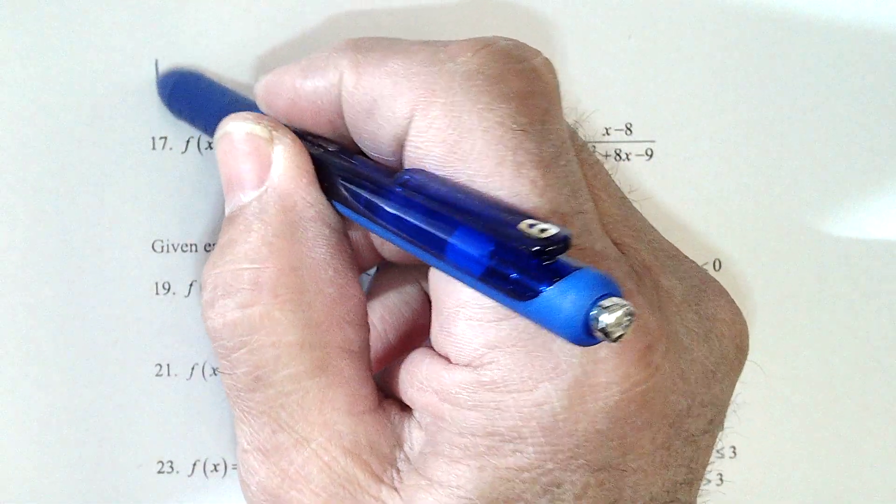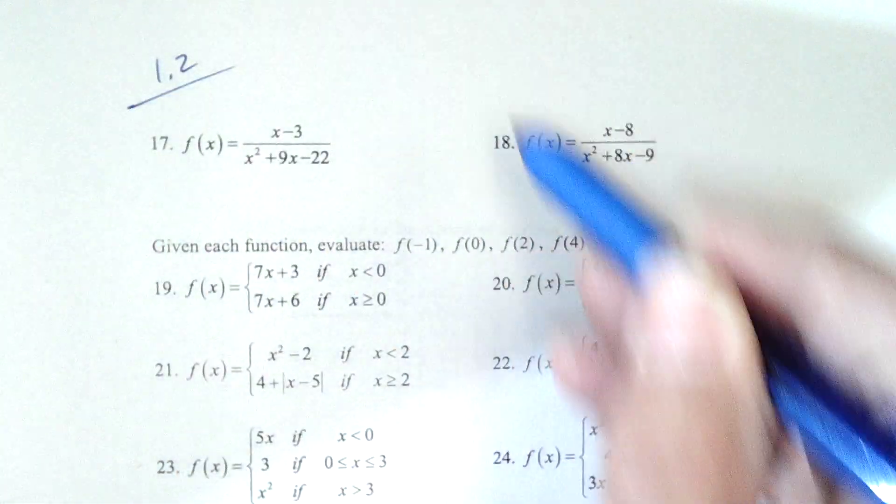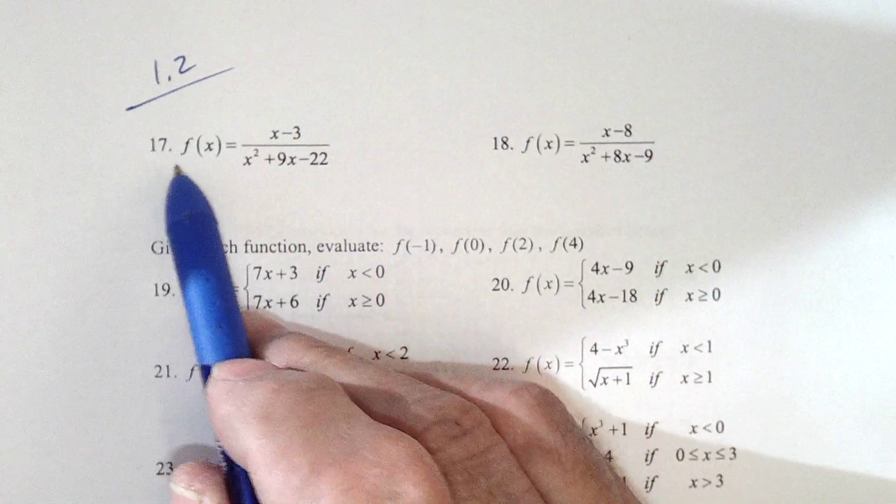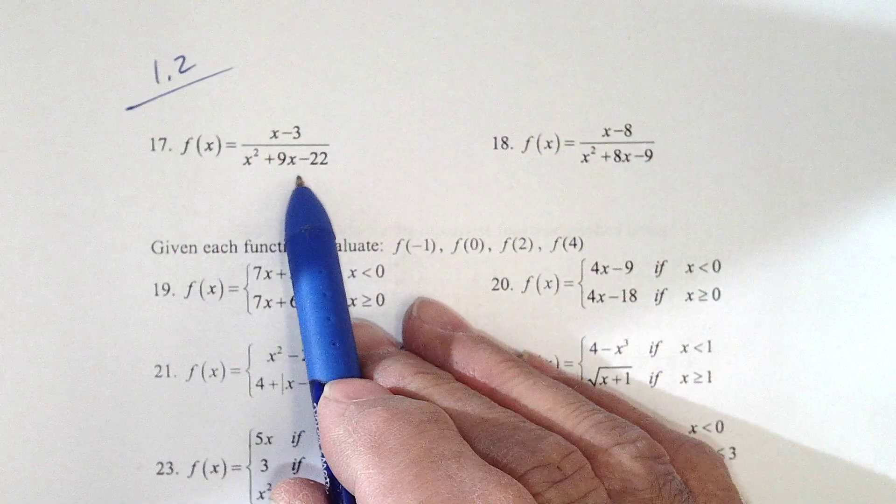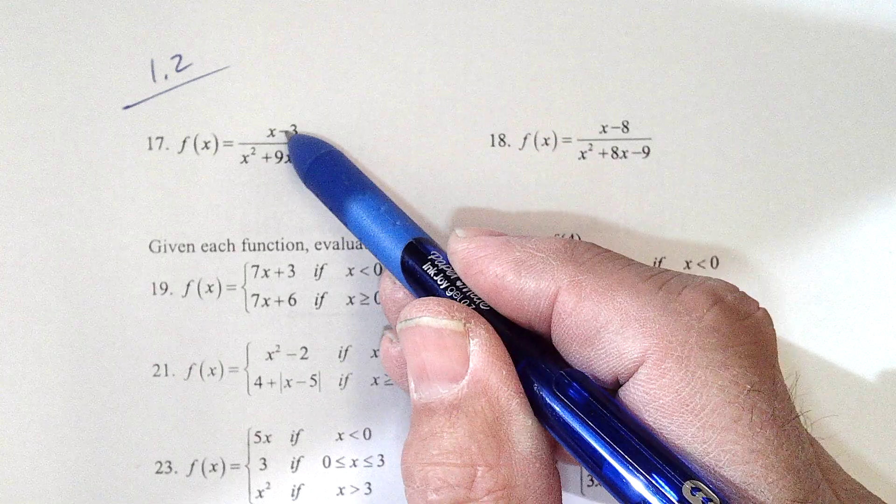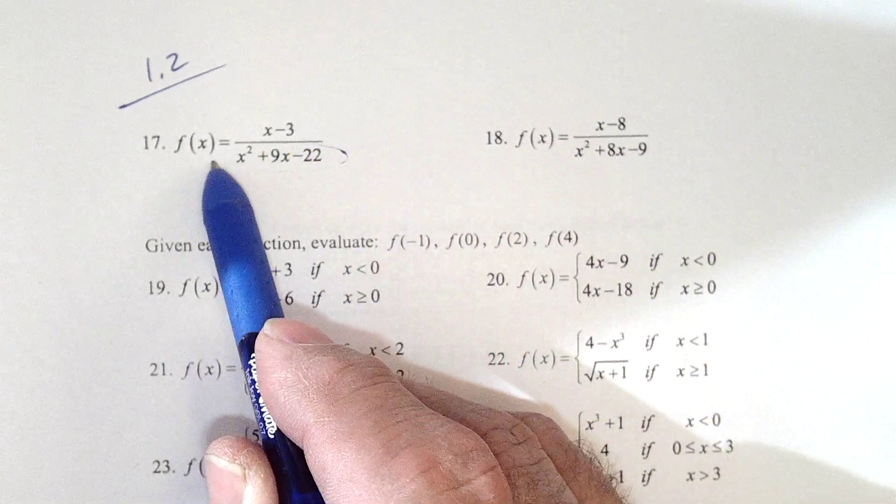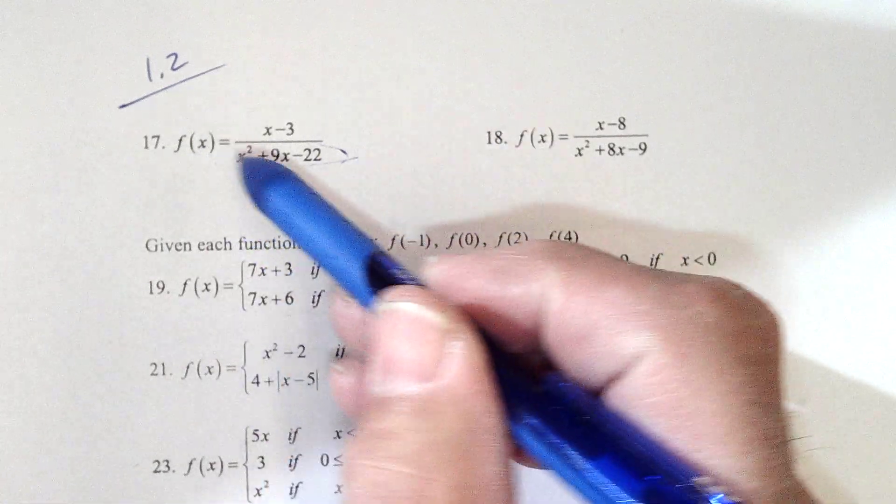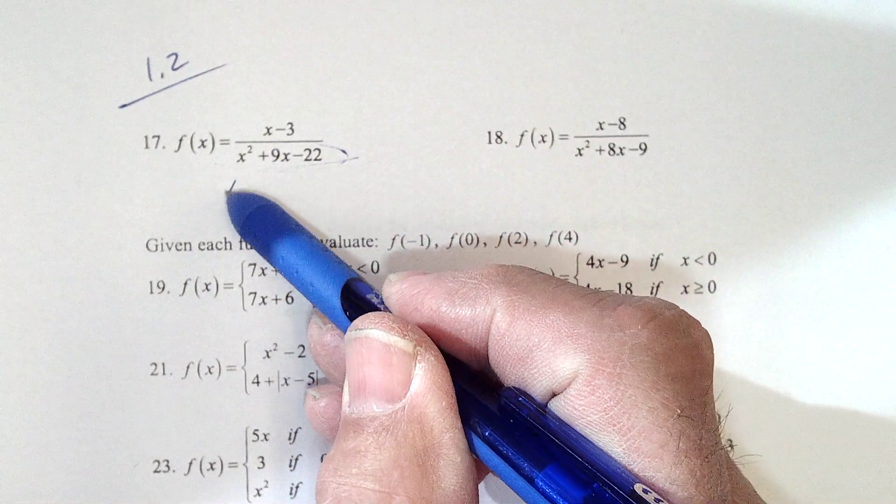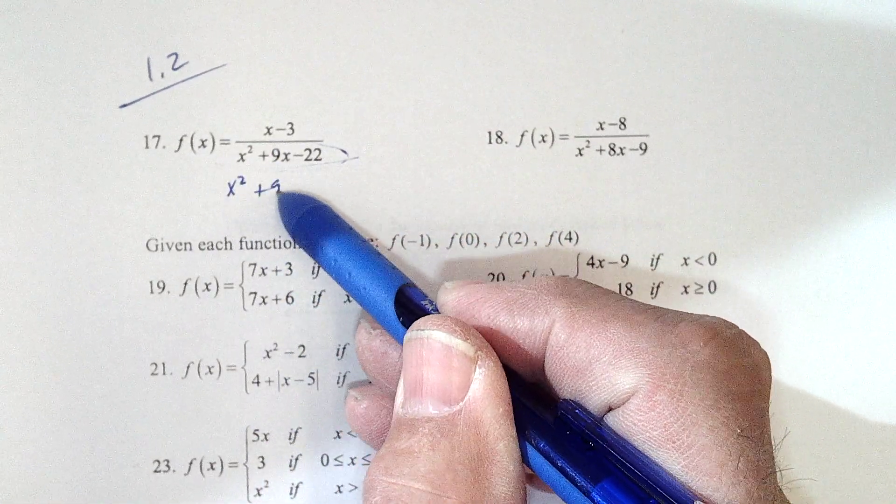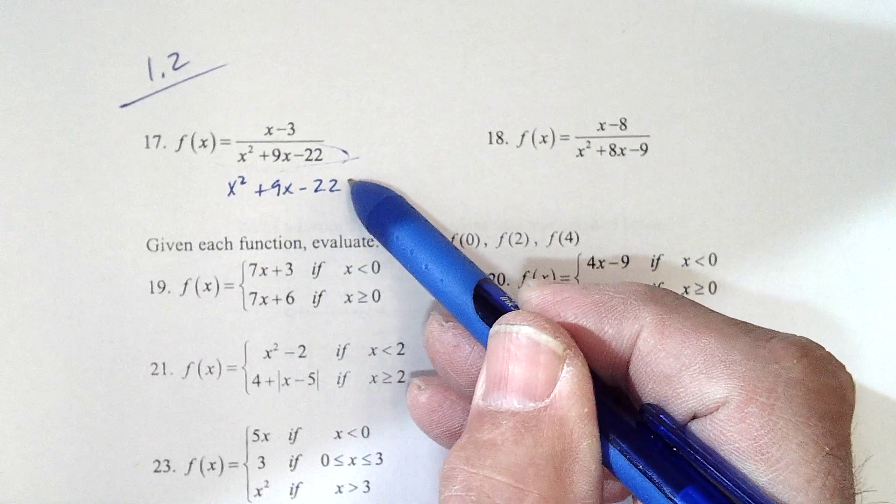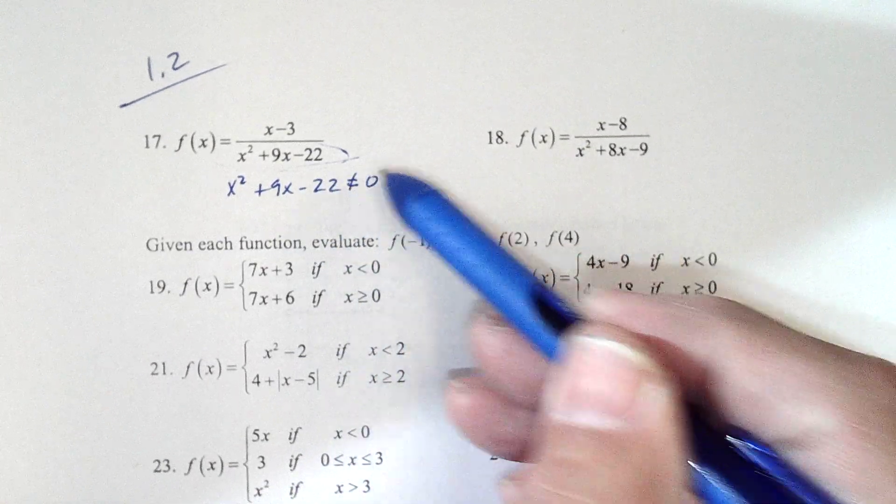Okay, this is section 1.2. Problem 17, we're supposed to figure out the domain. Now, we have division here, and you can never divide by 0. So we don't want x squared plus 9x minus 22. We don't want it to equal 0.